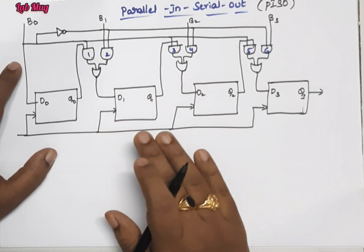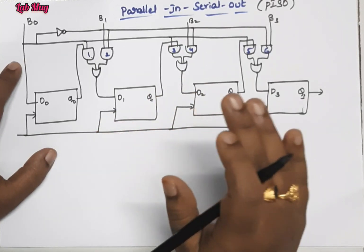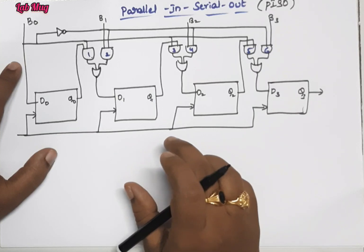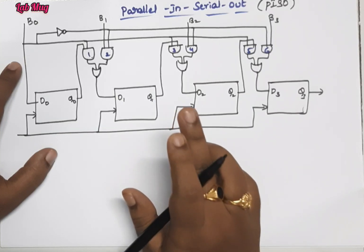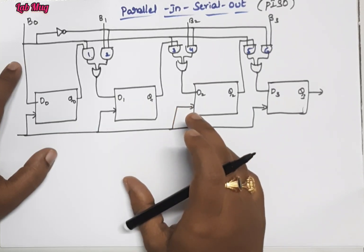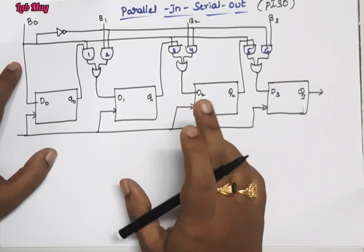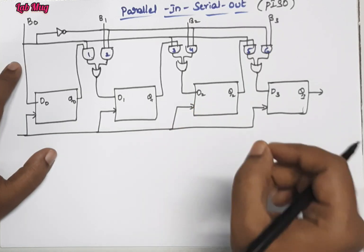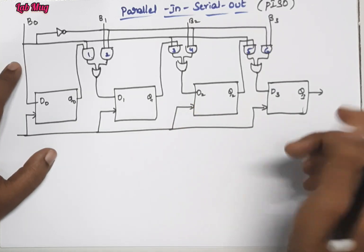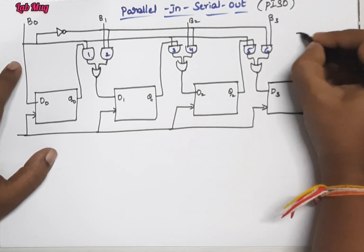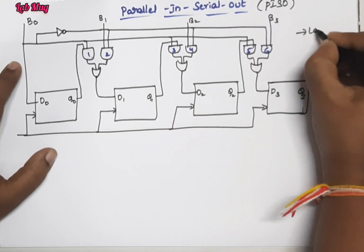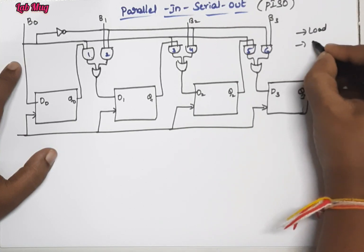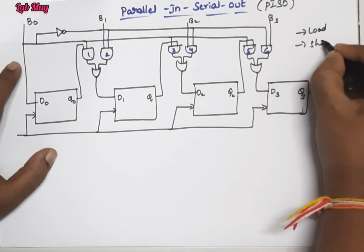So here, how data is passed — how input is given parallel — let's look at that first. In this, we get data in two modes: load mode and shift mode. The first is load mode and the second one is shift mode.